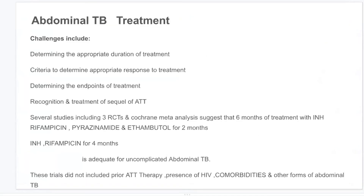For abdominal tuberculosis treatment, challenges include determining appropriate duration, appropriate response, endpoints of treatment, and recognition of sequelae of ATT. Several studies including three RCTs and a Cochrane meta-analysis suggest that 6 months of treatment — INH, rifampicin, pyrazinamide, and ethambutol for 2 months, then INH and rifampicin for 4 months — is adequate for uncomplicated abdominal tuberculosis. These trials did not include prior ATT therapy, HIV, poor comorbidities, or other forms such as hepatic tuberculosis, so modification may be required.